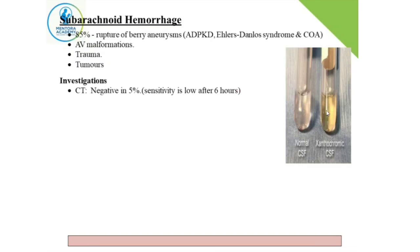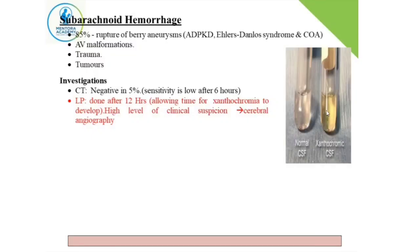The best investigation is CT brain, but remember CT brain may be negative in five percent of cases. If you have a strong clinical suspicion of subarachnoid hemorrhage and the CT brain shows no hemorrhage, the next step is lumbar puncture to examine the CSF. If the CSF is kept for six to twelve hours, you find xanthochromia — a yellowish color due to hemolysis occurring in the CSF. The best way to confirm the diagnosis is a cerebral angiogram, which shows extravasation of blood at the site of arterial damage.